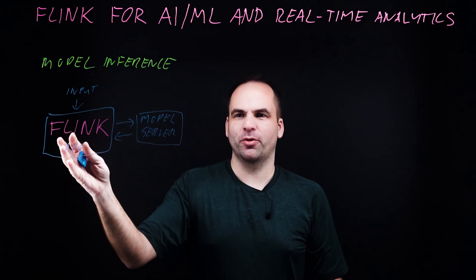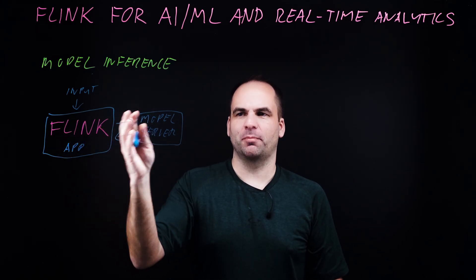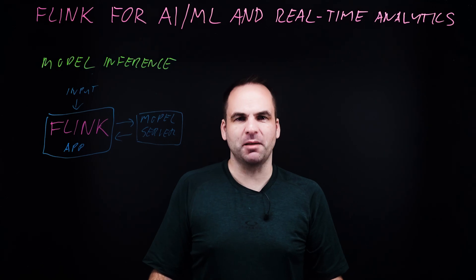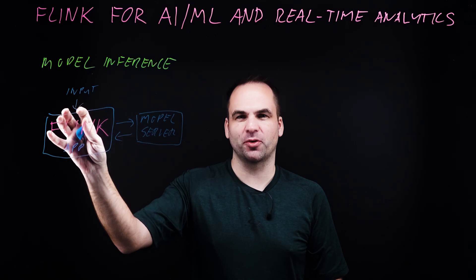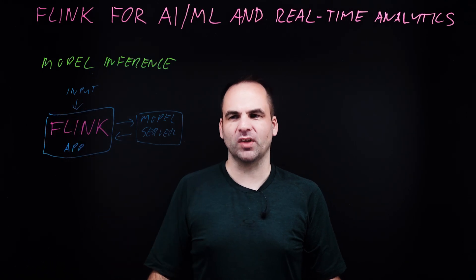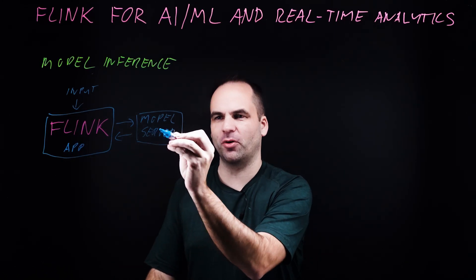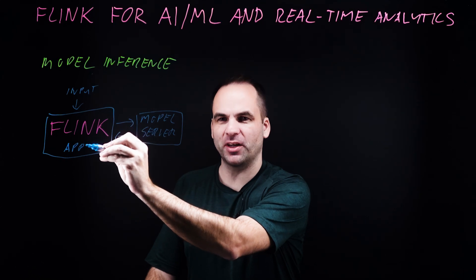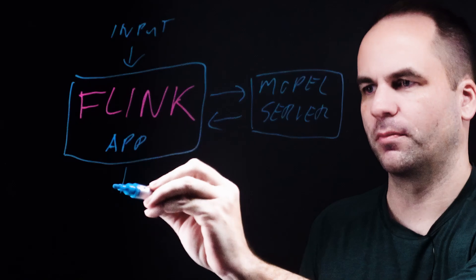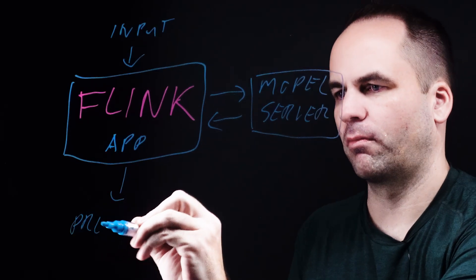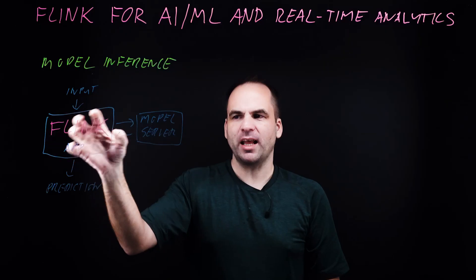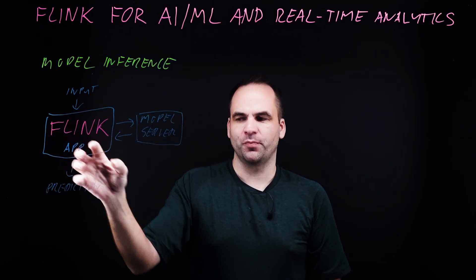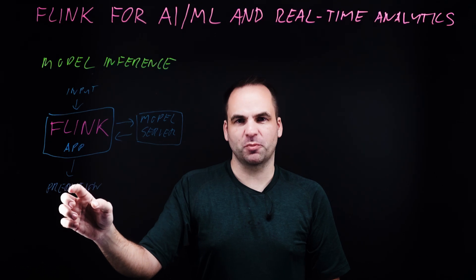With this decoupling, you can scale and operate them independently. For example, in the model server you can do A/B testing, versioning, and so on of your models, and still use all of that together with your real-time stream processing application. Then you use the result from the model server as part of your real-time stream process — where we get input, process it, use it for real-time model inference, and then use that prediction or generation to drive the next part of the business process.